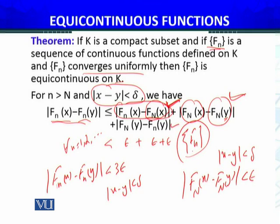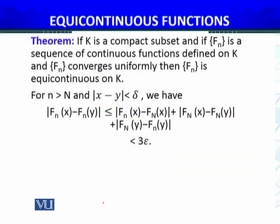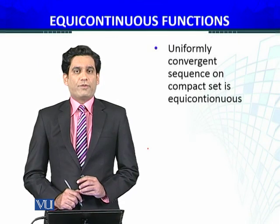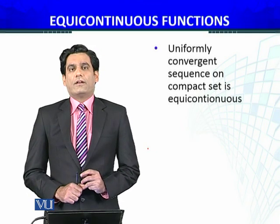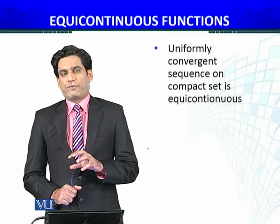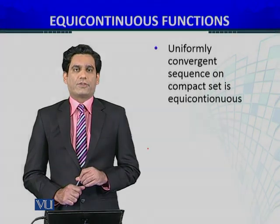Here there is no restriction on n. This is true for all functions belonging to the sequence of functions and for all x, y belonging to the compact set K satisfying this condition. This is the definition of equicontinuous. So this is less than 3ε, and hence we have proved that a uniformly convergent sequence is equicontinuous under certain conditions.